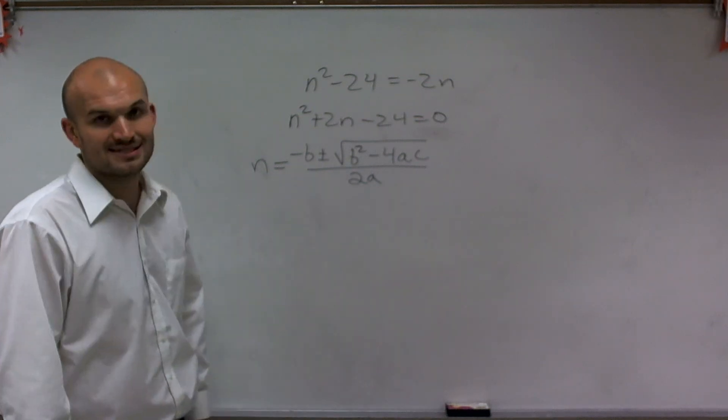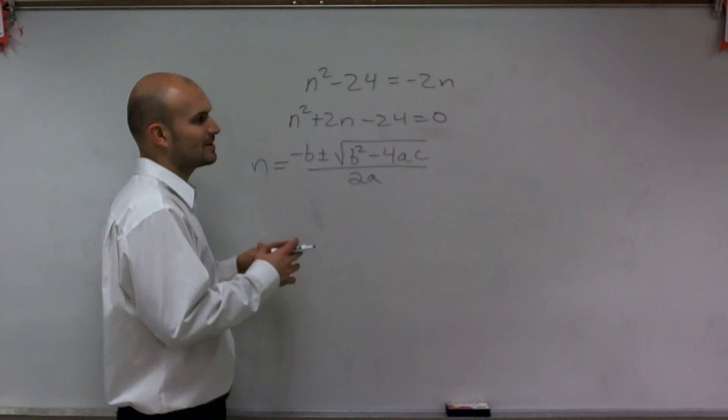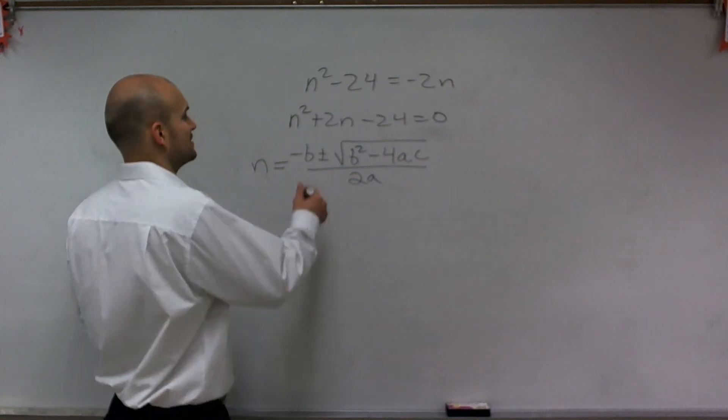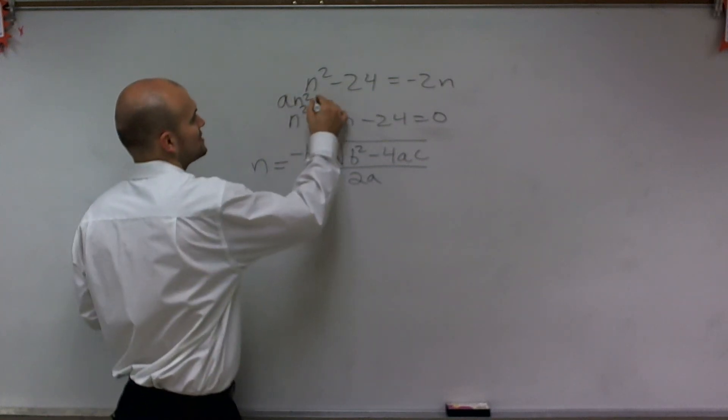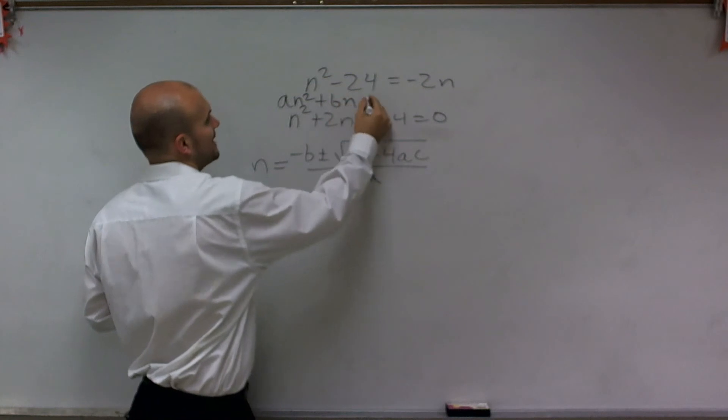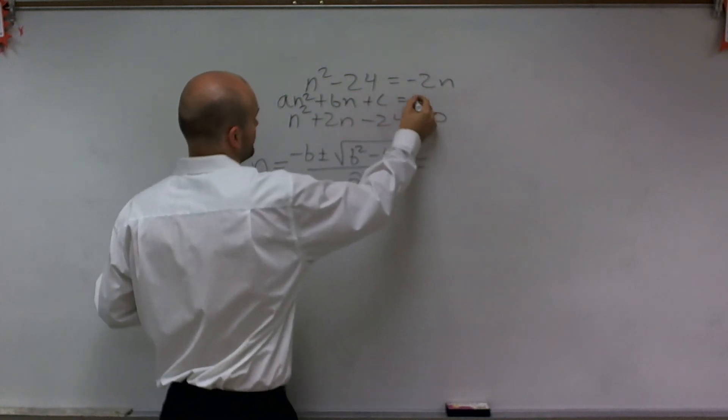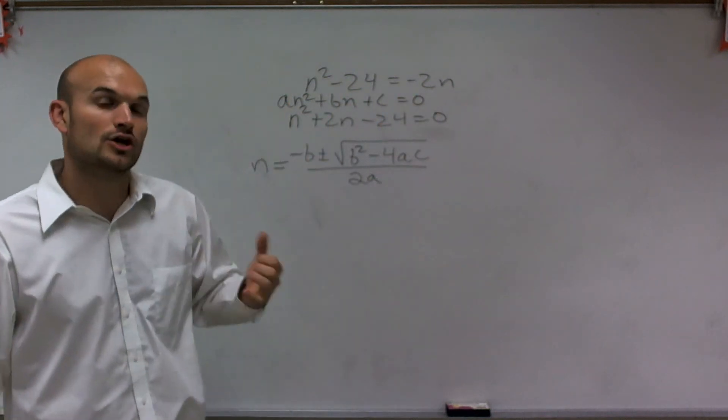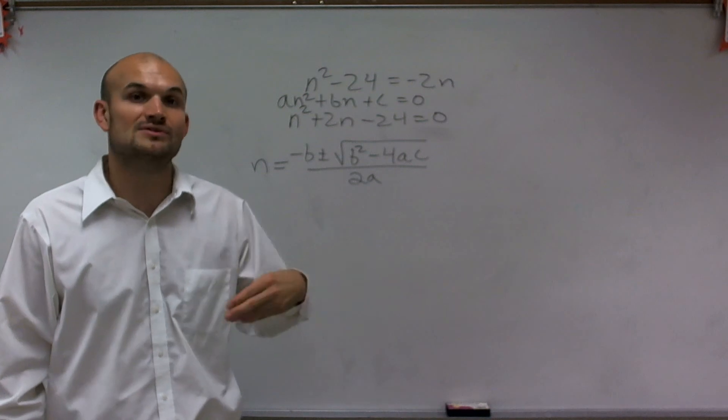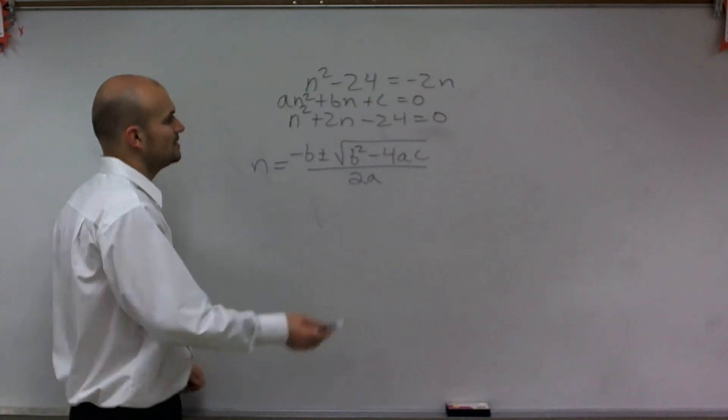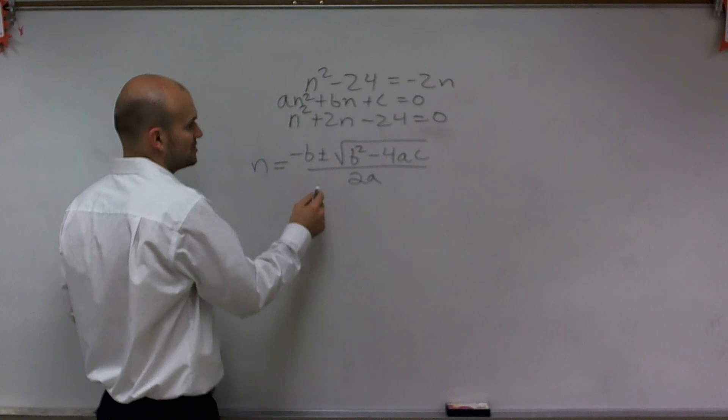Where do I get this a, b, and c? Those come from the quadratic form of an equation. Quadratic form equation is an² + bn + c = 0, where a, b, and c are your coefficients. In this case, my b is going to be 2.